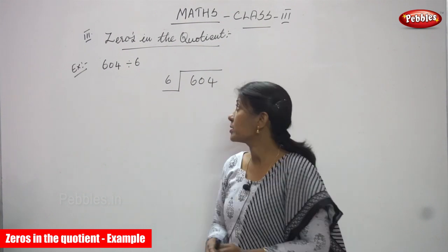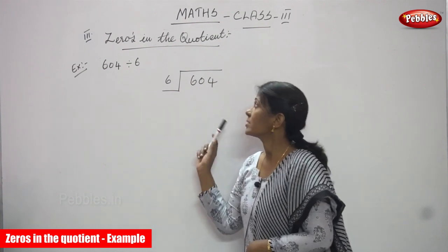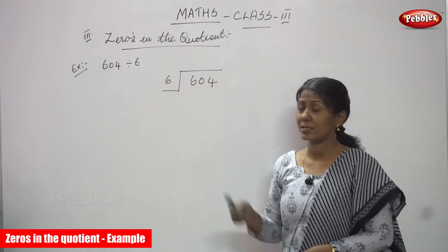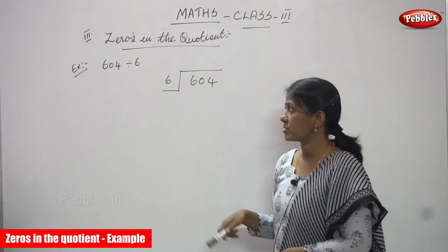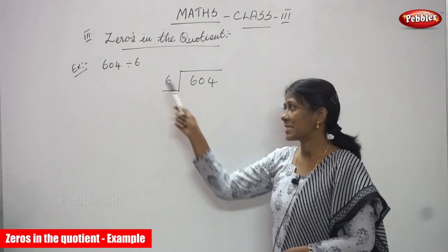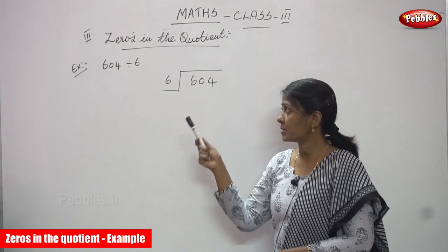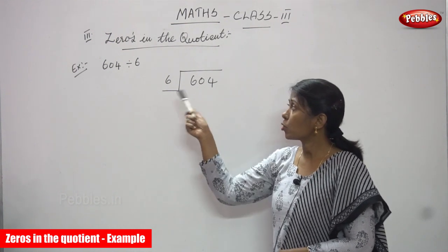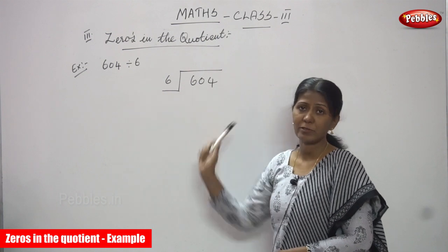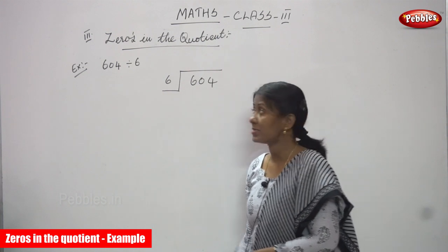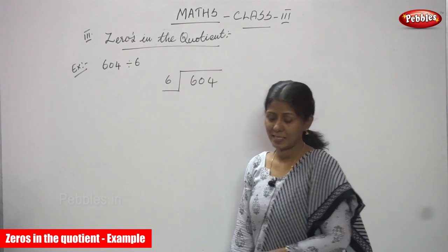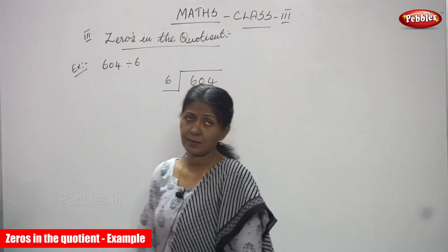Hi, welcome you all. In today's class, we are going to see zeros in the quotient. This is the third subdivision. Now we are going to see the example sum. First sum: 604 divided by 6. Let's start the class.